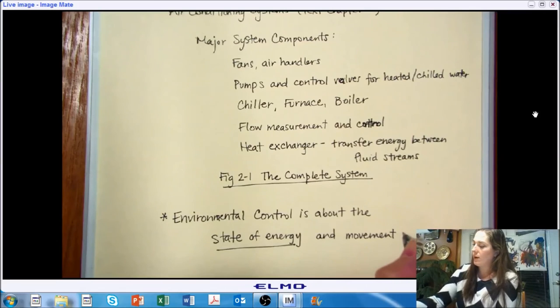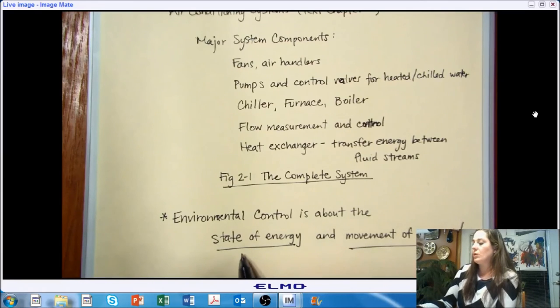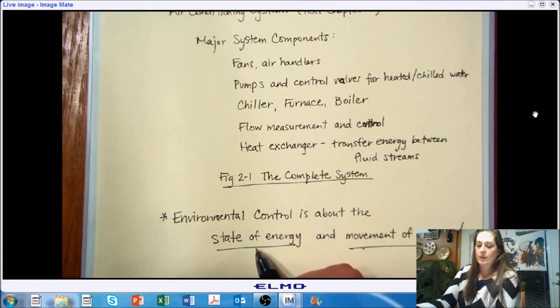So each of those components has a purpose that helps us to go from one state of energy, move that energy to a desired state. So we have to know where we are and we have to know the process that will change in the way we want it to, to get to the state where we want to be.